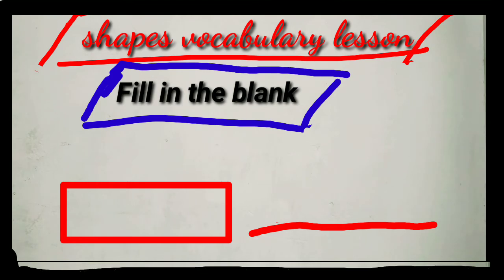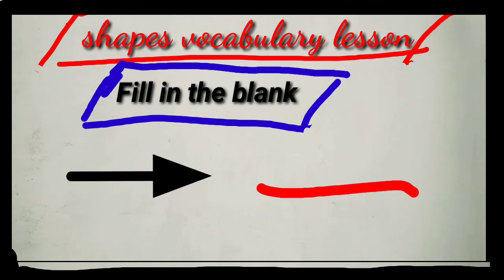What shape is this? This is a red triangle. What shape is this? This is an arrow.